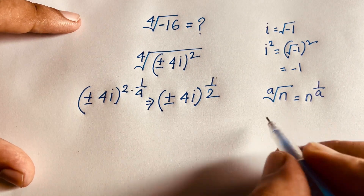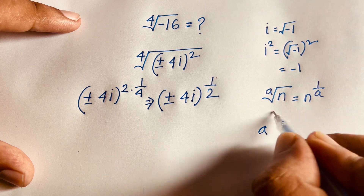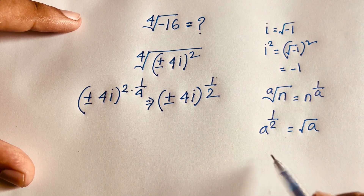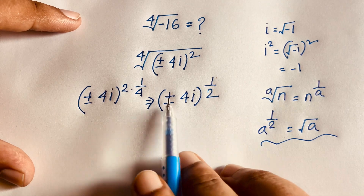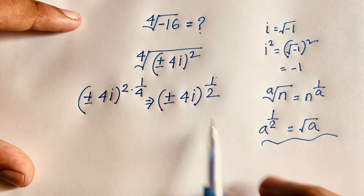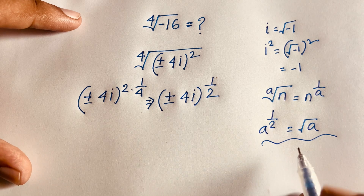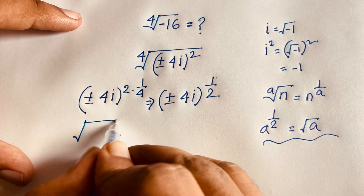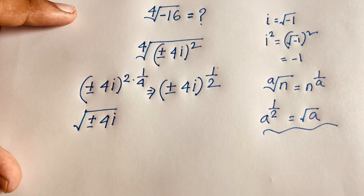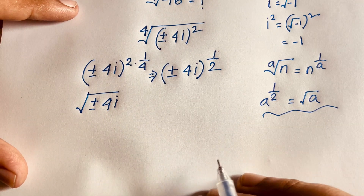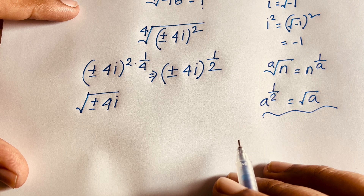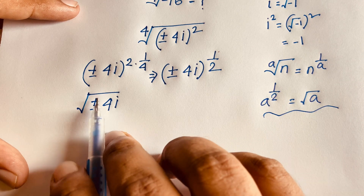Using the rule that a^(1/2) equals square root of a, I can say (±4i)^(1/2) equals √(±4i). So the problem reduces to finding the square root of ±4i — how do we solve this complex number square root?